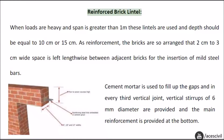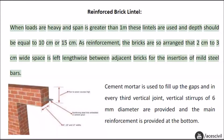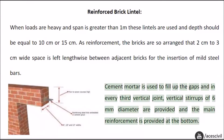Reinforced Brick Lintel. When loads are heavy and span is greater than 1 m, these lintels are used and depth should be equal to 10 cm or 15 cm. As reinforcement, the bricks are so arranged that a 2 cm to 3 cm wide space is left lengthwise between adjacent bricks for the insertion of mild steel bars. Cement mortar is used to fill up the gaps, and in every third vertical joint, vertical stirrups of 6 mm diameter are provided, and the main reinforcement is provided at the bottom.